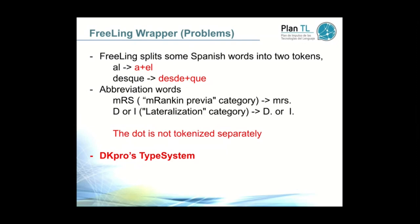To solve this problem, we updated the FreeLing tokenizer for all involved components, which I'll explain in the next slides. For each component that we wanted to tokenize, we applied FreeLing instead of the CTEX tokenizer. Another problem was the interoperability challenge — FreeLing and other UIMA components usually have their own type systems. For example, the FreeLing wrapper uses the DKPro type system, but CTEX has its own type system.